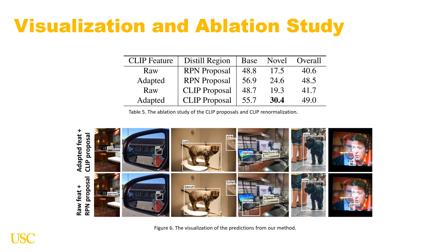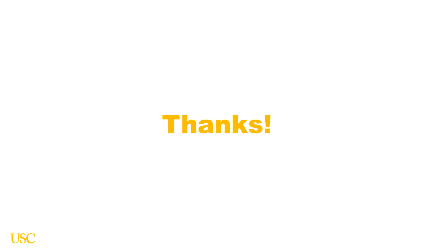We present our ablation study with visualization. The results in the table show that feature adaptation and distillation region selection are both beneficial to our detection performance. The visualization also shows that applying feature adaptation and new distillation regions improves the classification accuracy of our model, and thus improves the model's mean average precision on both datasets. Thank you for listening.